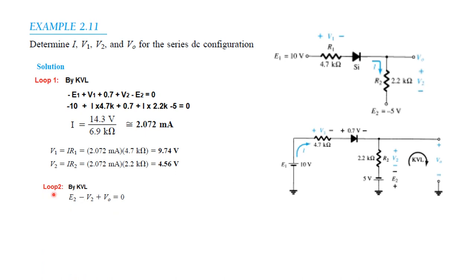For Loop 2, applying KVL: plus E2 minus V2 plus V0 equals 0, therefore V0 equals V2 minus E2. V2 is 4.56V, E2 is 5V, so V0 equals minus 0.44V.